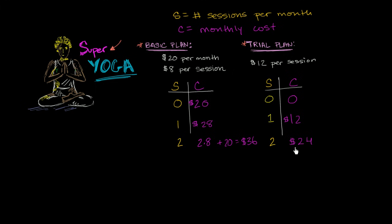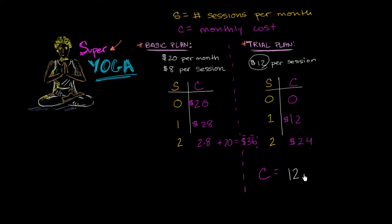I want to explore at what point the trial plan becomes a little bit worse. But before we do that, let's think about representing this algebraically, because it will allow us to be more precise. If S is the number of sessions per month and C is the monthly cost, under the trial plan our total cost is equal to $12 times the number of sessions — C equals 12 times S.